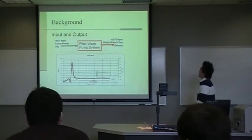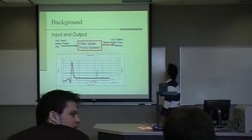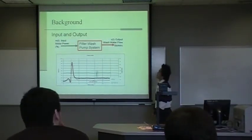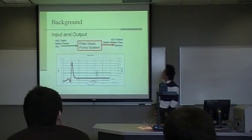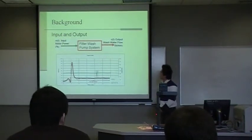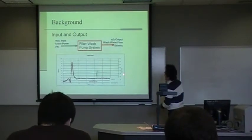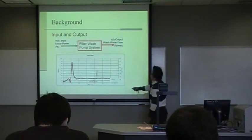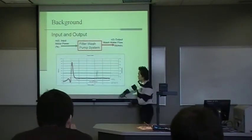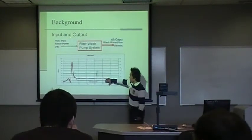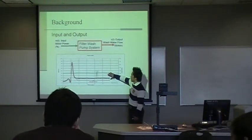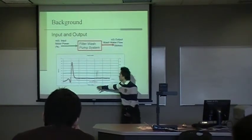That's a diagram of input and output. For input we have voltage power and for output we have flow rate. And here's the graph - the green line here is input and the green line here is output at steady state.